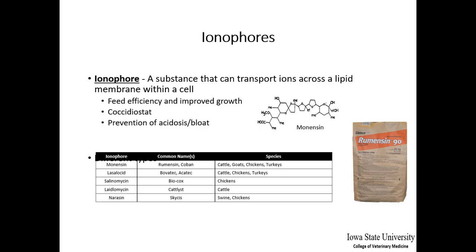These are substances that can transport ions across a lipid membrane within a cell. They are all feed additives used to improve feed efficiency and growth. They also have a coccidiostat action and are also helpful in preventing acidosis and bloat in ruminants. The main ionophores include monensin, lasalocid, salinomycin, narasin, and narezin.